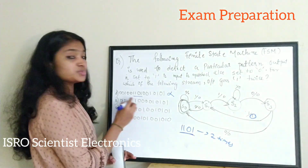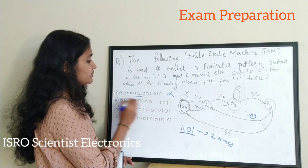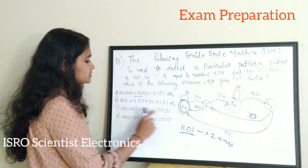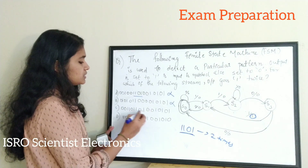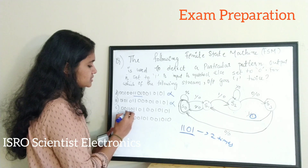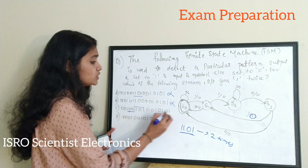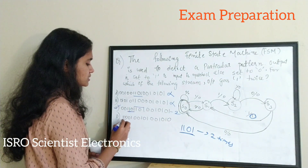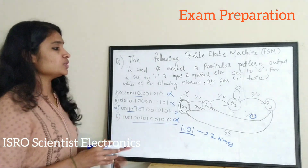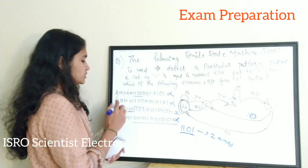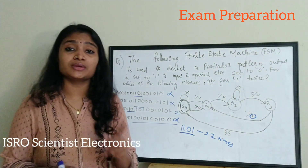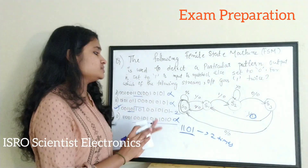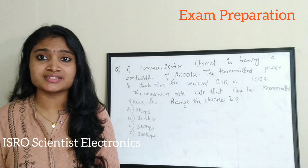Looking at the second option: there is no 1 1 0 1 in that stream, so it won't produce even a single output of 1. For the third stream: there is a 1 1 0 1, and then once again a 1 1 0 1 — so it contains the pattern twice. The fourth stream has no 1 1 0 1 either. Therefore option C is the correct answer, as the sequence detector will produce output 1 two times.